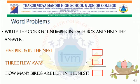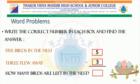Read the given word problem and solve it. Write the correct number in each box and find the answer. 5 birds in the nest — in the first box, we write the number 5. 3 flew away — in the second box, we write the number 3. How many birds are left in the nest? We subtract 3 from 5 and get the answer 2.